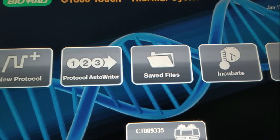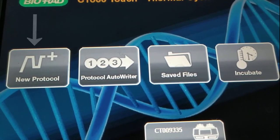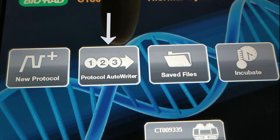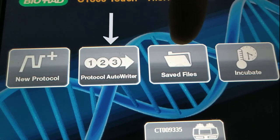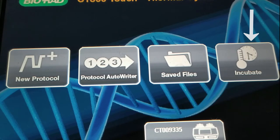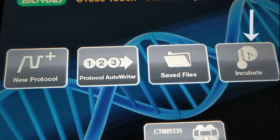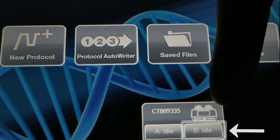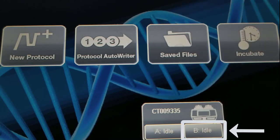Okay, so from this menu you can see that we have the option to start a new protocol. We can write the protocols in the automated way. We can also use the protocols saved from the previous sections. And finally we have the incubation. Also we have the choice of the blocks. In this case we will be using the block B and when we set up the program we will need to indicate that we are using the block B. Now it says that it is idle.